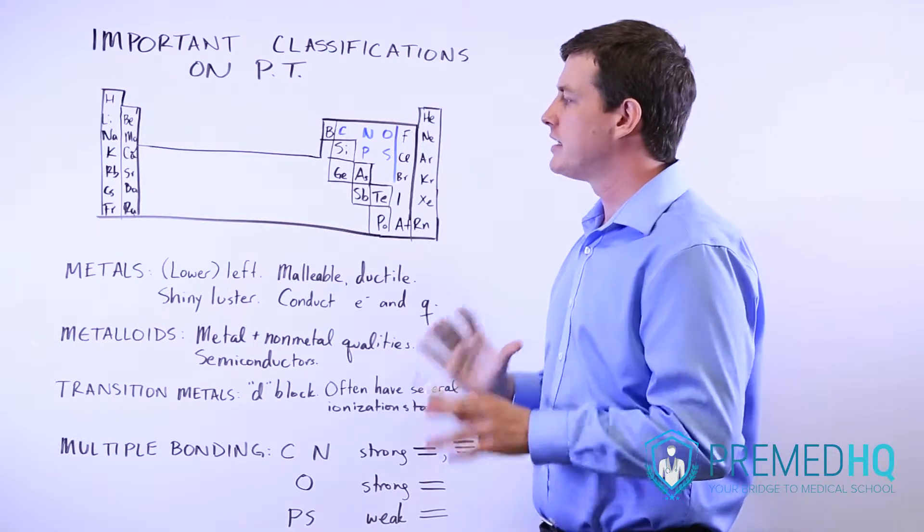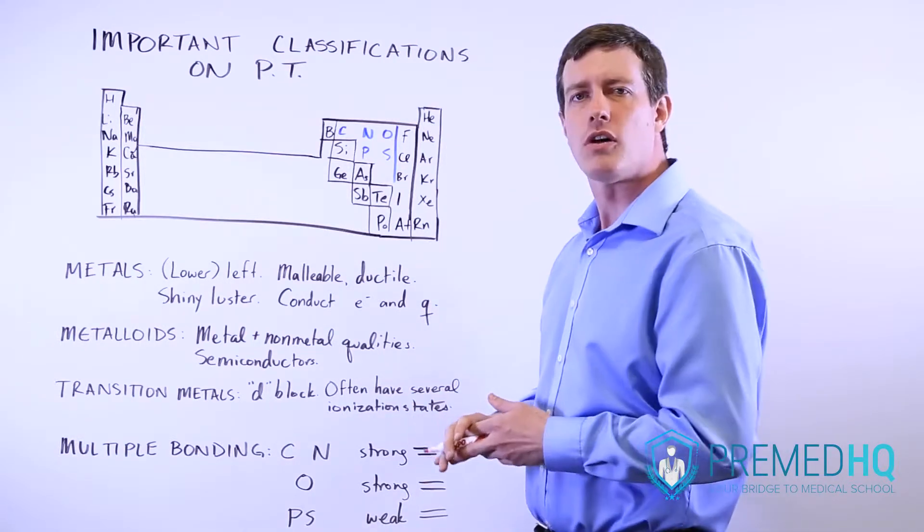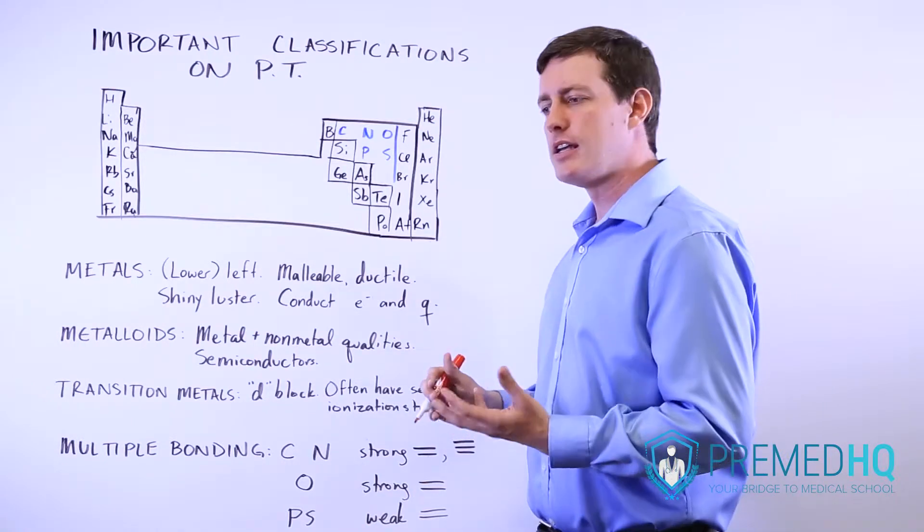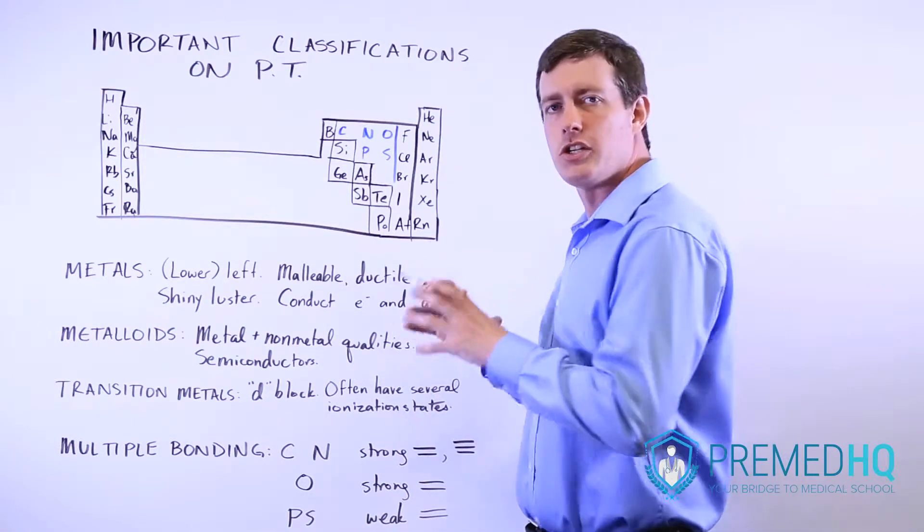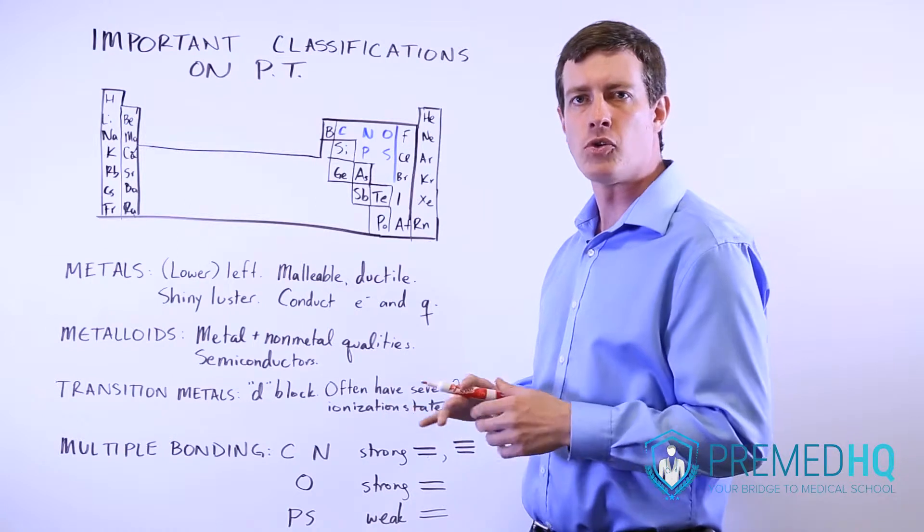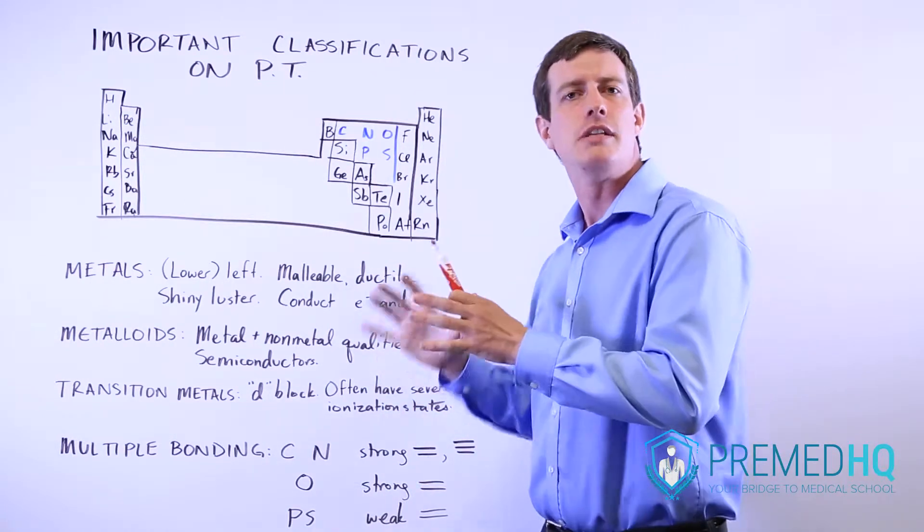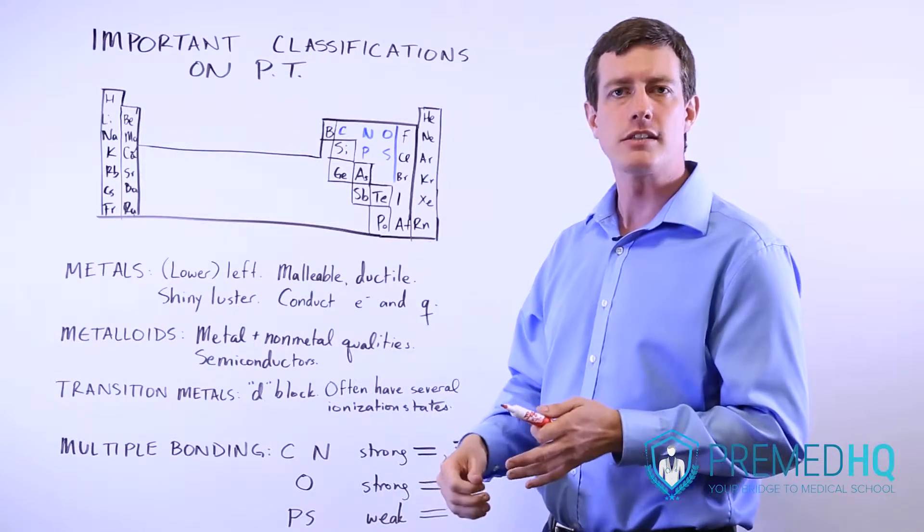Metals are distinctive because they have two qualities known as malleability and ductility. Malleability is the ability for it to change shape while still in a solid form. For example, if you were to hit a metal with a hammer, it would deform slightly in response to that.